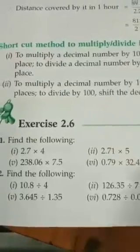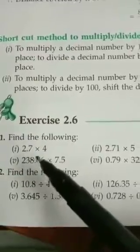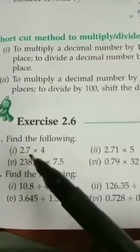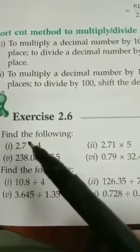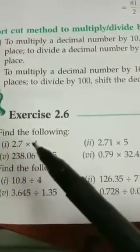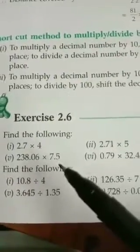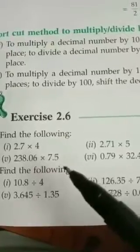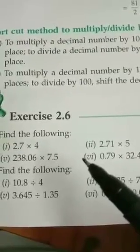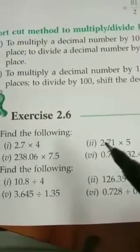Follow question number 1: Find the following. So 2.7 into 4. You can write 2.7 as 27 by 10, into 4. So you can write 27 into 4, which gives 108 divided by 10. That is equal to 10.8, because you have to shift the decimal since you have denominator 10.